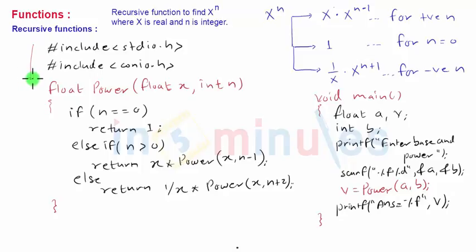We start with normal hash include commands. Then we have a function defined over here with name power. It's a user defined function taking float x and int n as parameter and float as a return type.